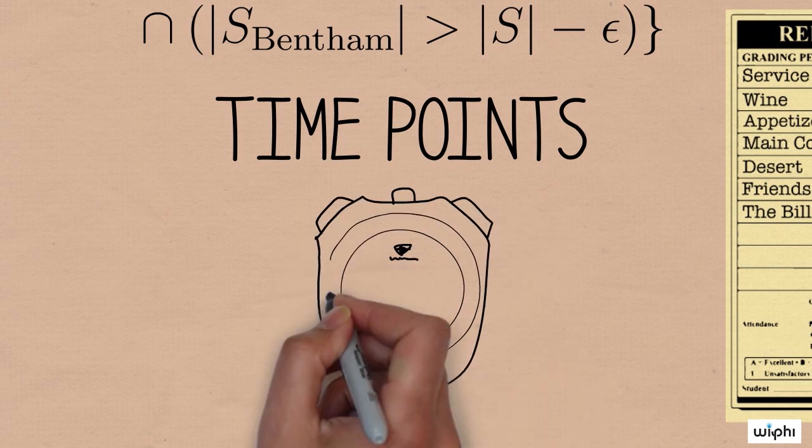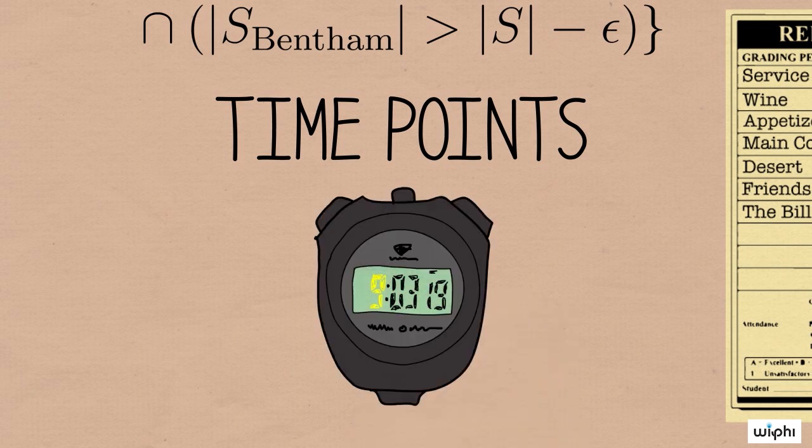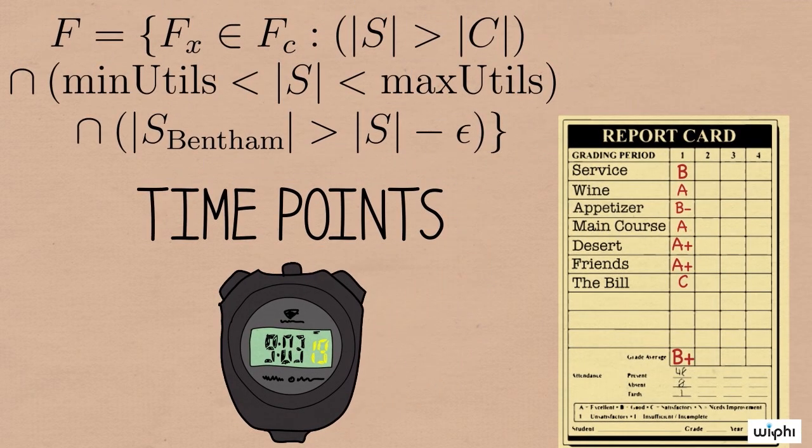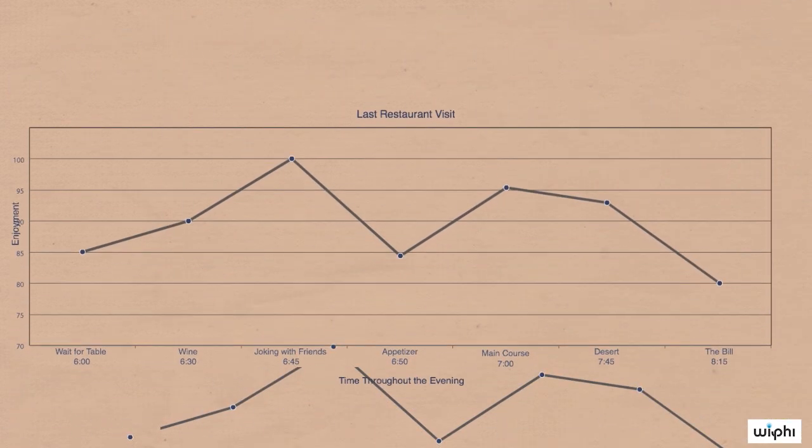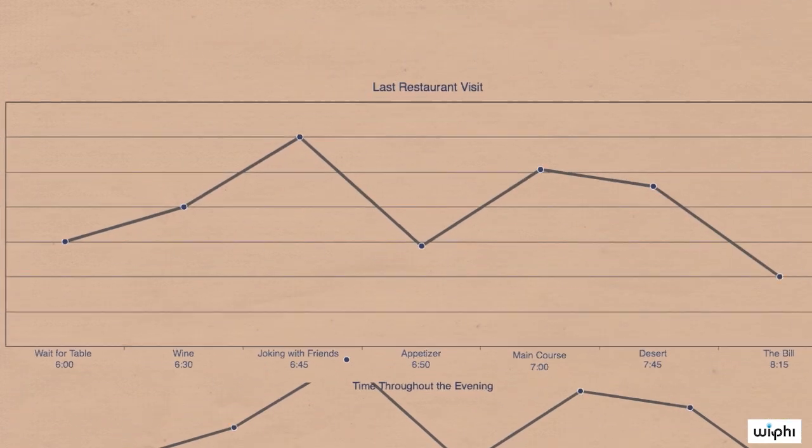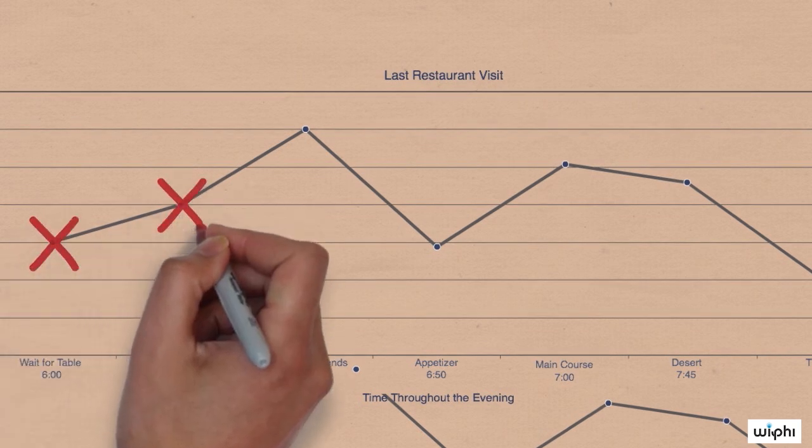When you thought about the restaurant, did your mind give you a rating to the experience across every single minute, or every second, or even every millisecond? It turns out that our minds figure out this complicated problem by using a surprisingly streamlined strategy. In fact, when we remember an event, we tend to ignore lots and lots of the parts of that event. We seem to make an evaluation based on only two parts of our experience.